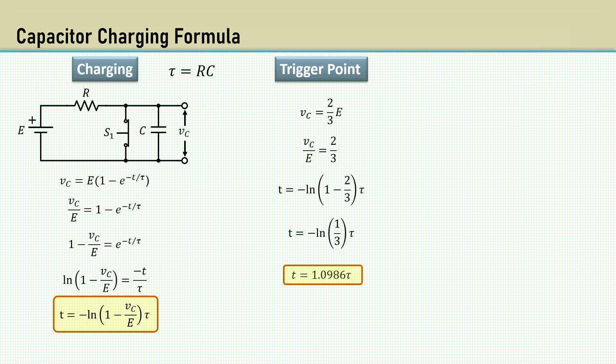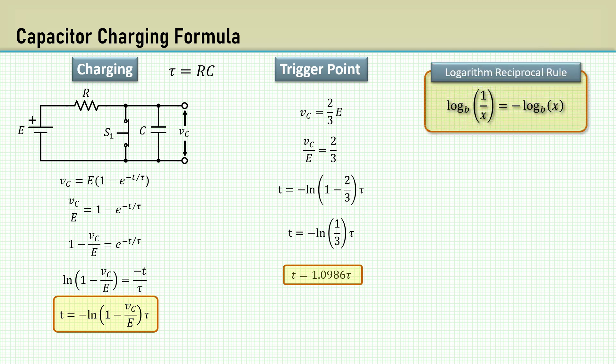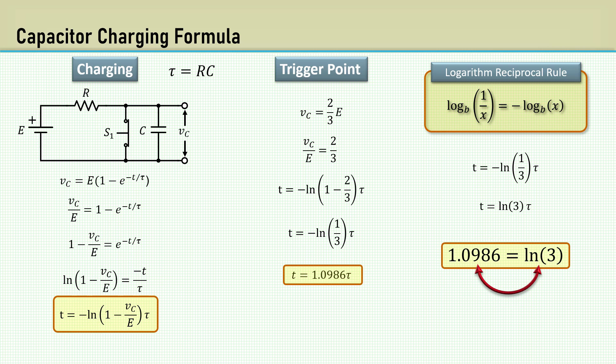To get a more meaningful number, we can apply the logarithm reciprocal rule. According to that rule, the logarithm of the reciprocal of any function is equal to its negative logarithm. Applying that rule to the negative natural log of 1/3 gives us the natural log of 3. We can substitute that natural log of 3 for any instance of the 1.1 for the 555 monostable timing.